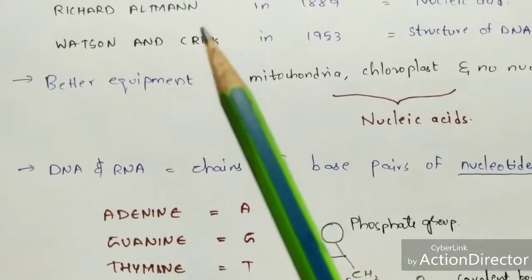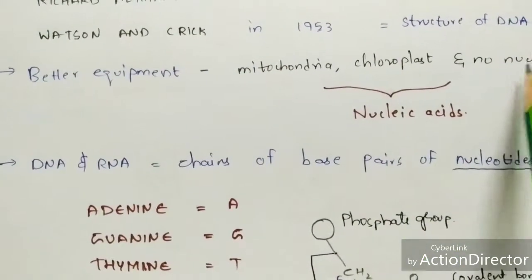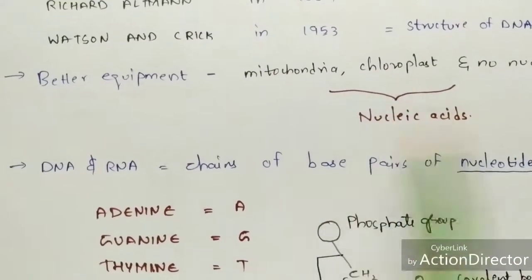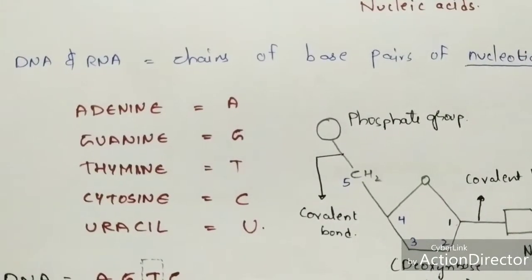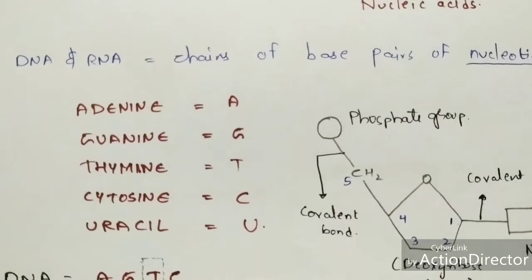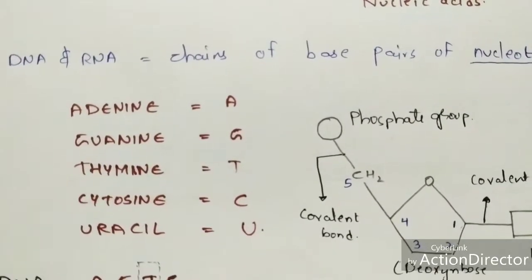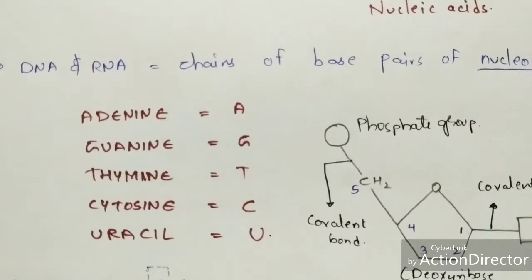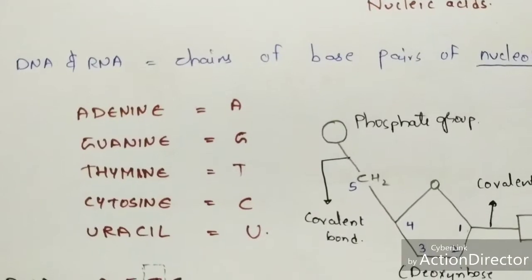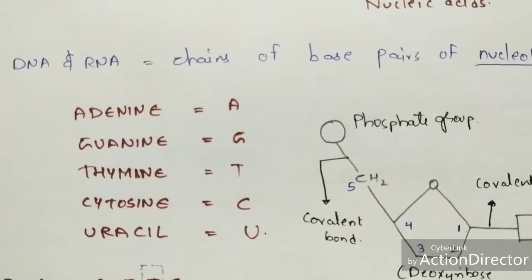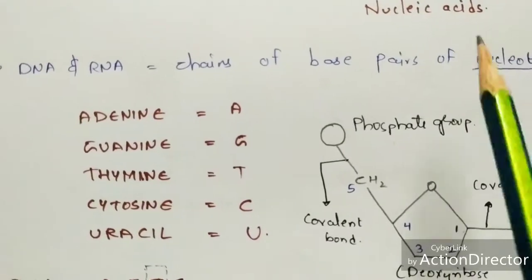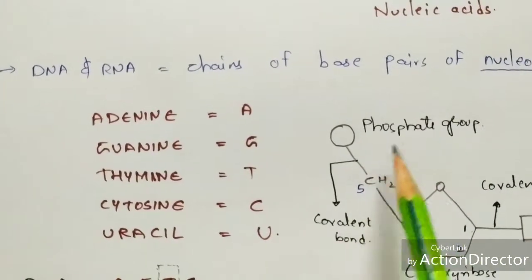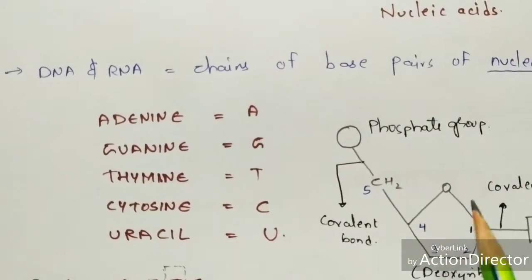DNA and RNA consist of chains of base pairs of nucleotides. Nucleotides consist of a nitrogenous base, a phosphate group, and deoxyribose sugar or ribose sugar depending on whether it is DNA or RNA. You can define nucleotide as the base pair consisting of a nitrogenous base, phosphate group, and deoxyribose or ribose sugar.